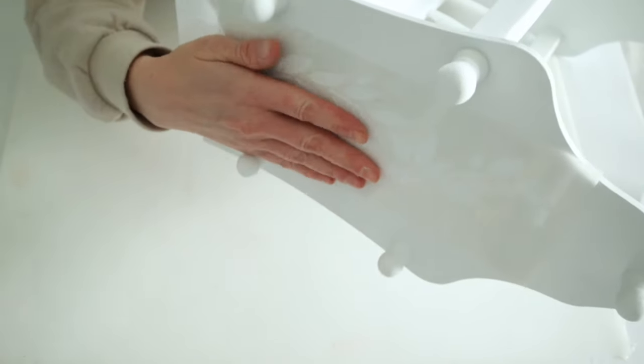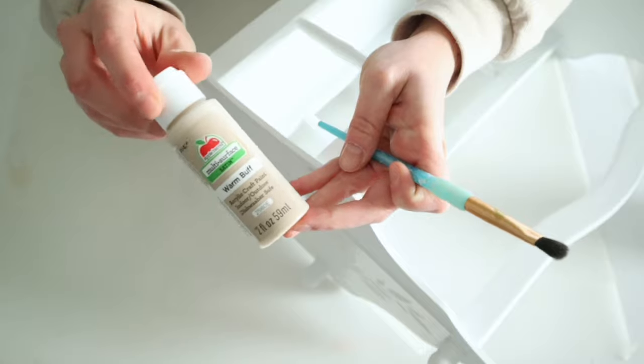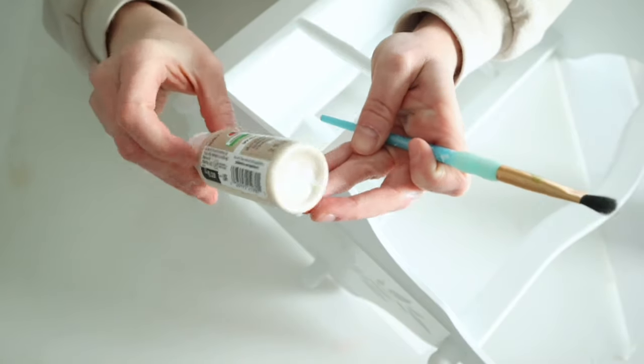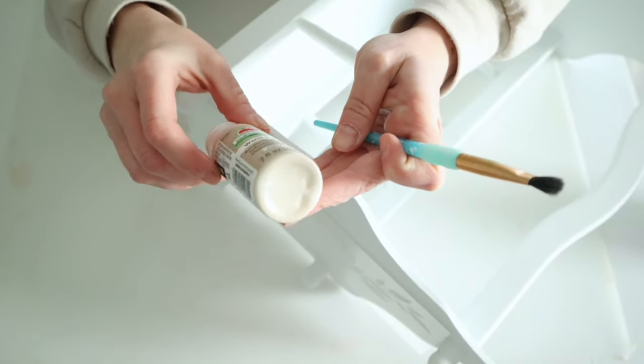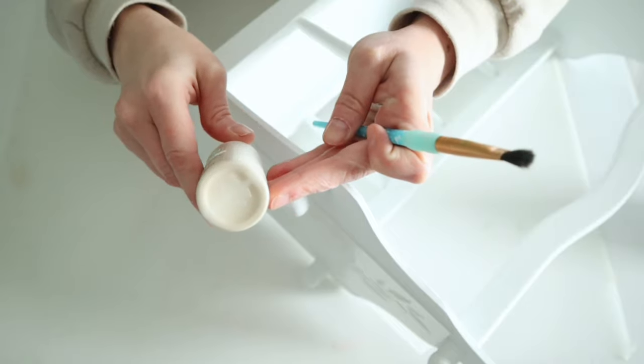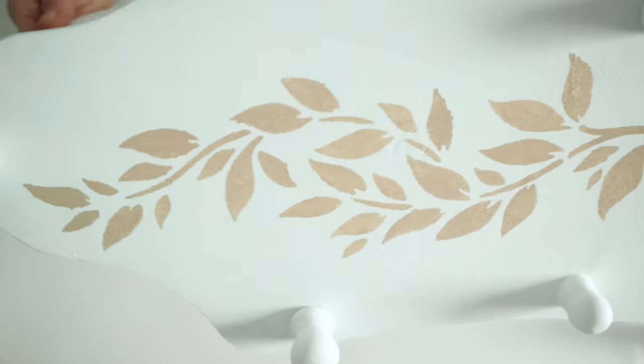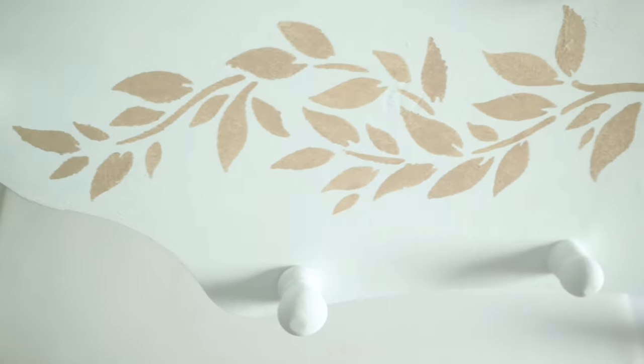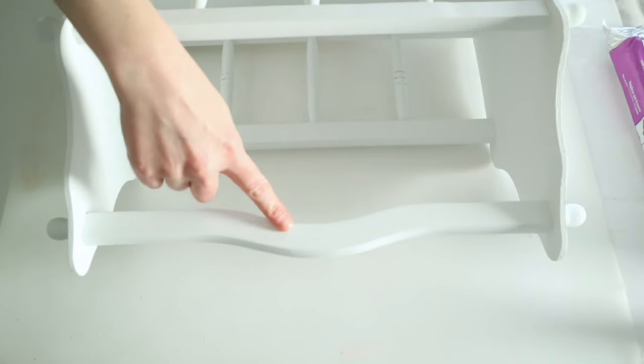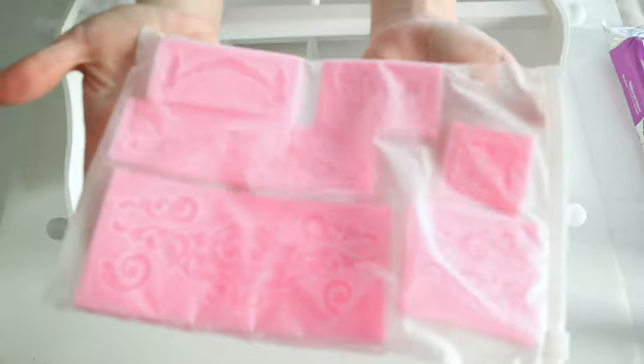I'm using this stencil that I got in a pack of six stencils, I believe, from Amazon. I didn't get any video footage of me stenciling this, but I do use the stencil on both sides of this magazine rack and again using that Apple Barrel color warm buff to do this stencil. These fit perfectly on the sides of this magazine rack.